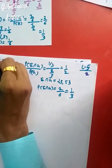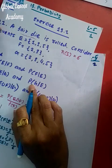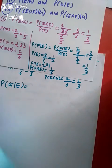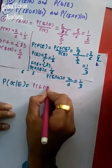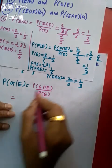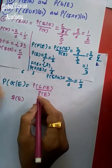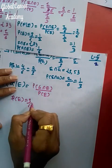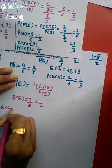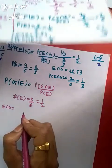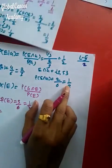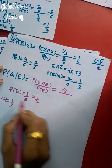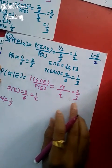Next, we find P(G|E). P(G|E) = P(G∩E) ÷ P(E). P(E) = 1/2 (found earlier, with points 1, 3, 5). P(E∩G) = 1/3. Therefore P(G|E) = (1/3) ÷ (1/2) = 2/3.